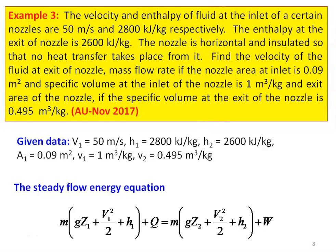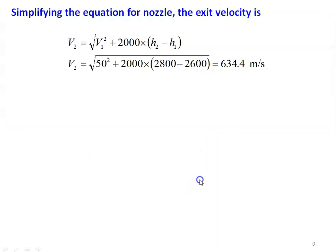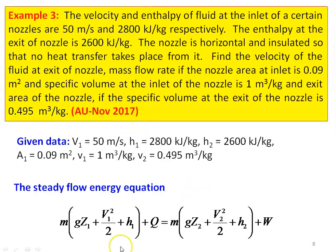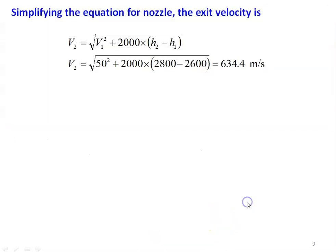Writing the steady flow energy equation in full form and simplifying for the nozzle: Q = 0 (adiabatic), W = 0 (no work), and Z₁ = Z₂ (horizontal nozzle). The simplified equation becomes: V₁²/2 + H₁ = V₂²/2 + H₂. Rearranging: V₂ = √(V₁² + 2000·(H₁ − H₂)). Substituting V₁ = 50 m/s, H₁ = 2800 kJ/kg, H₂ = 2600 kJ/kg, the exit velocity V₂ = 634.4 m/s.